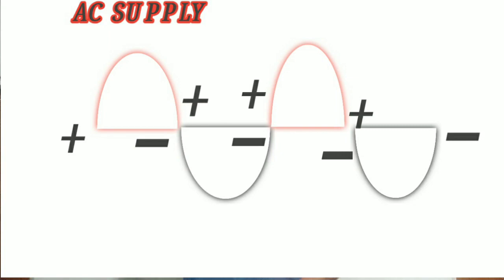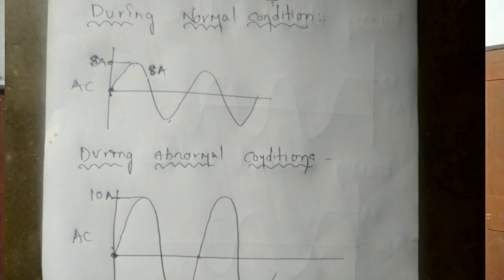Let's start with the AC supply voltage. If you want to see the AC supply voltage, you can see it here. If you want to enter the waveform, you can see waveform one. With abnormal conditions, you can see the waveform.